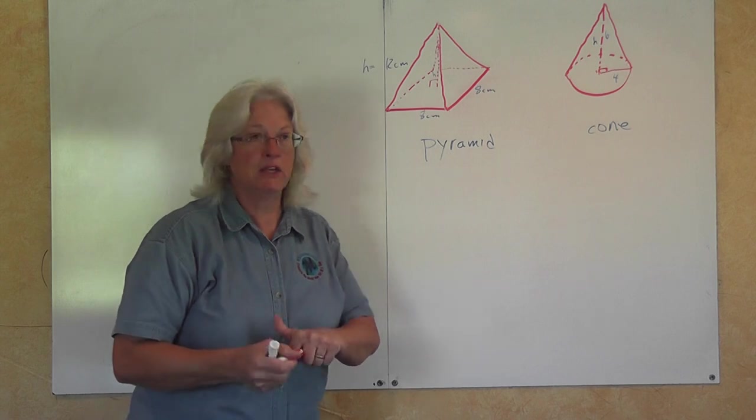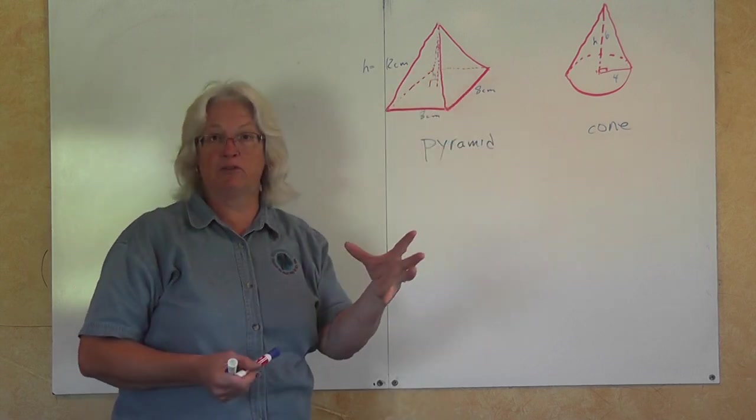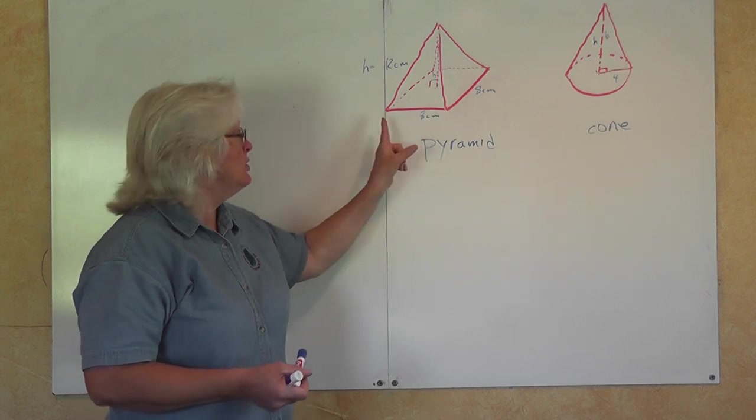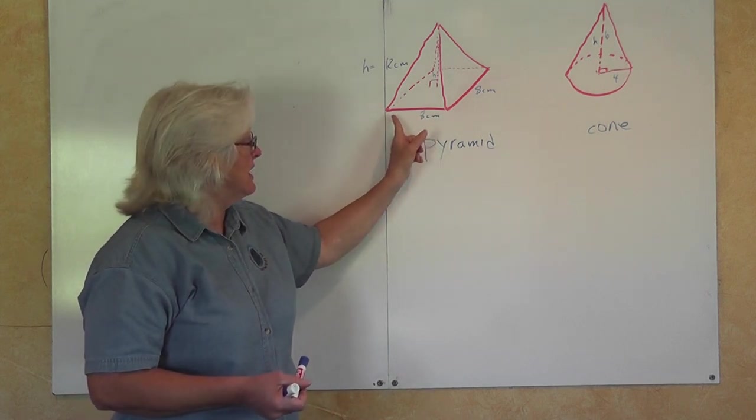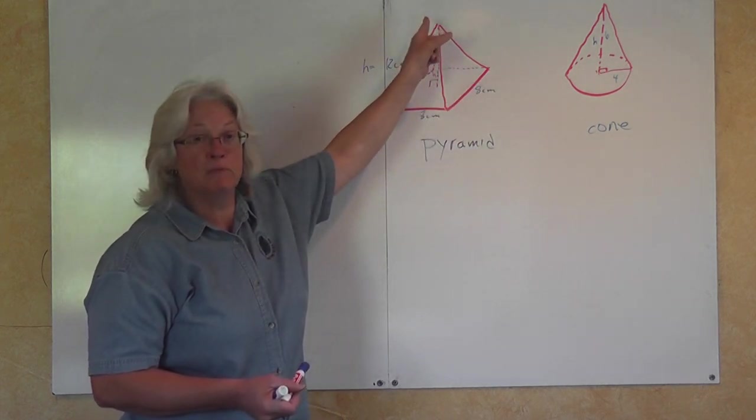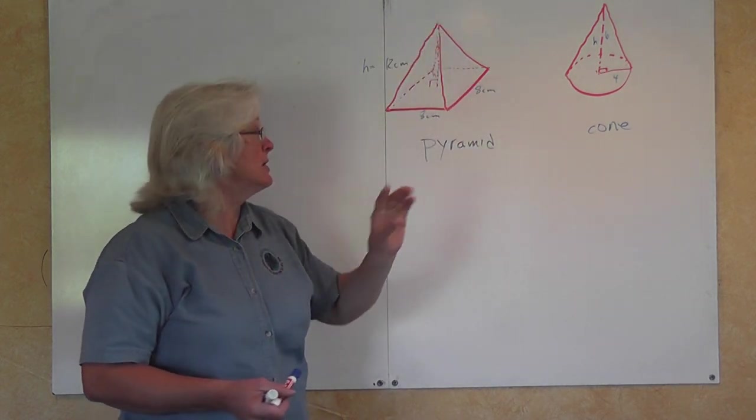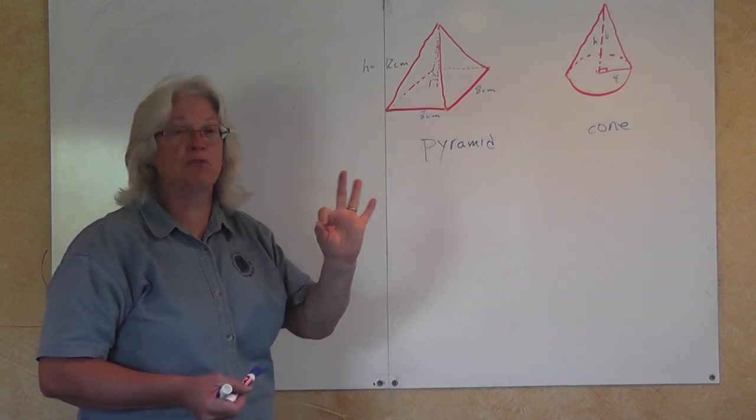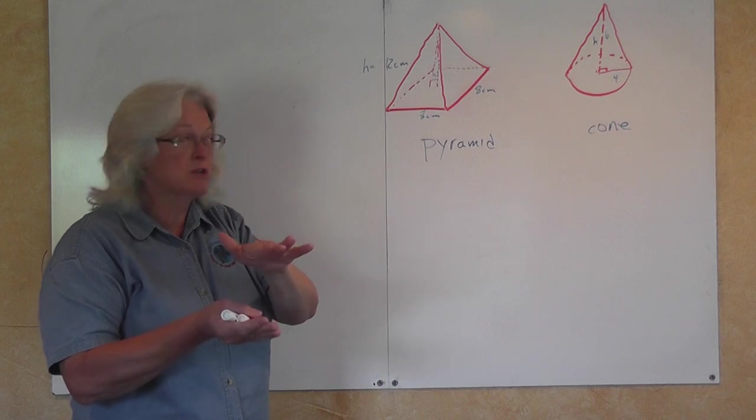If you would fill up this pyramid here, turn it upside down, fill it up with rice, and pour that into your rectangular box that is 8 inches by 8 inches by 12 inches high, it would take three times. You would have to fill that pyramid three times before the prism was filled.